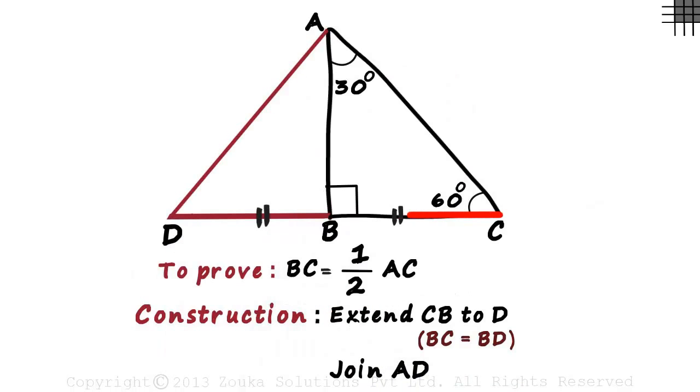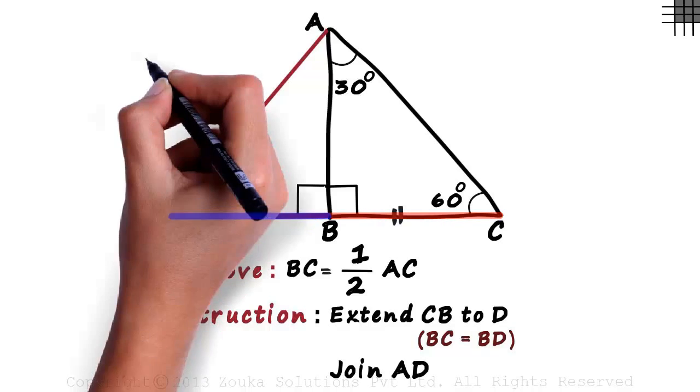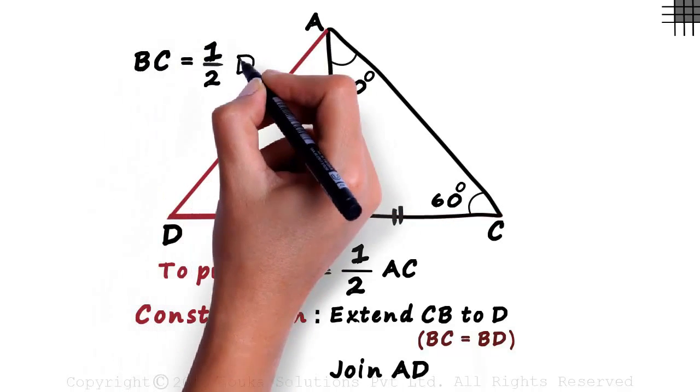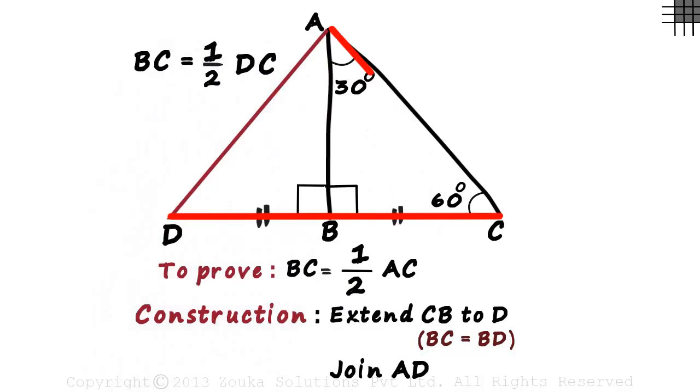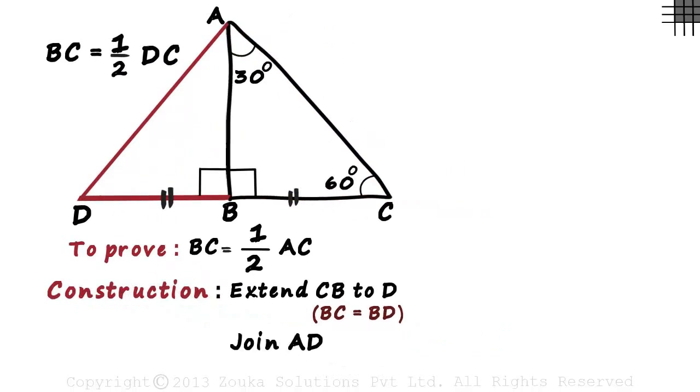Because we have extended CB, this angle also will be 90 degrees. Now let's analyze our construction. We are interested in length of BC. From our construction, we know that BC is equal to BD. It means that BC will be half of DC. So if we manage to prove DC equal to AC, we are done.